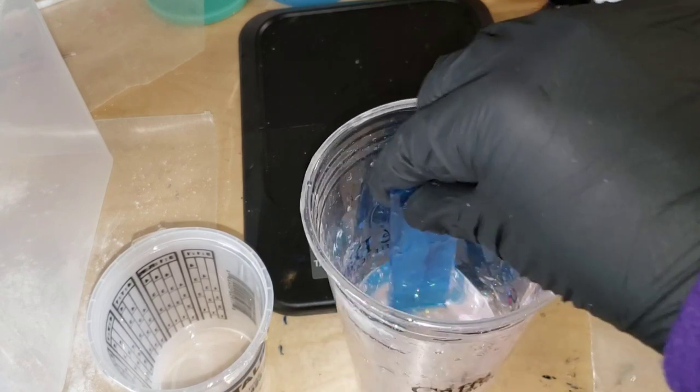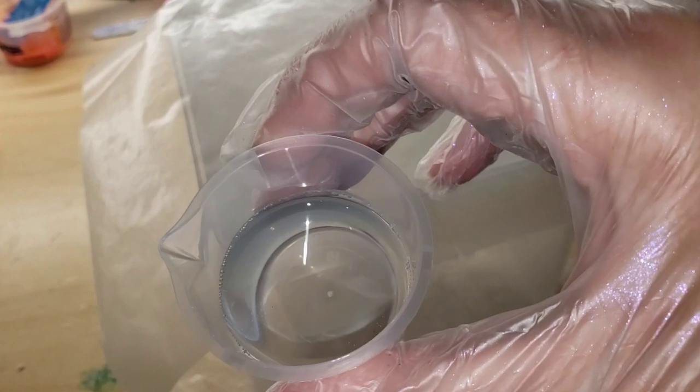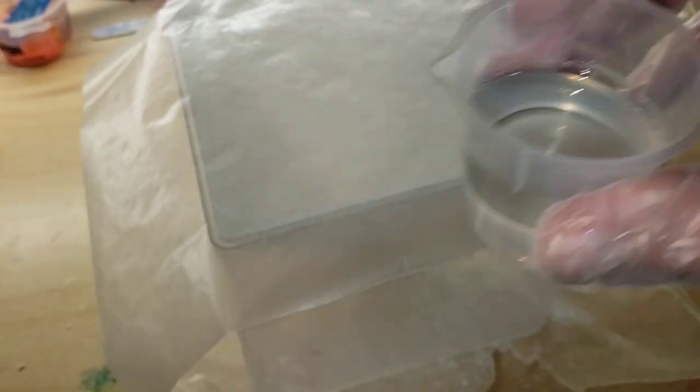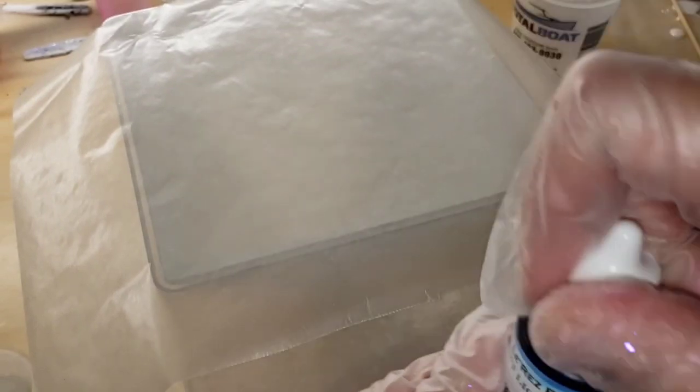See how I'm mixing really slowly. Mix really slow. You want to scrape the bottom of your cup, scrape the sides of your cup, make sure you're mixing slowly. And here's how it looks. See how clear that Liquid Diamonds is? That's why I love it for projects like this.